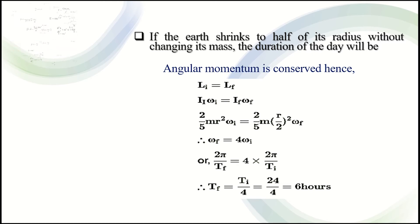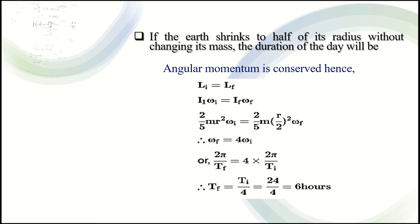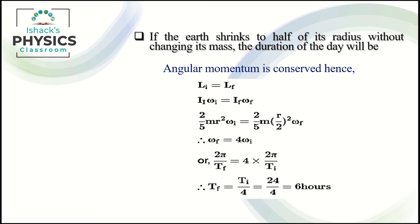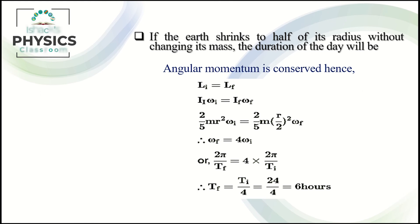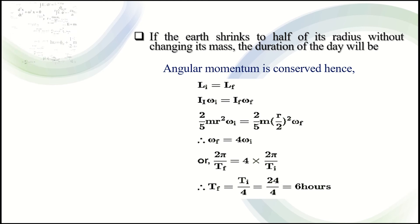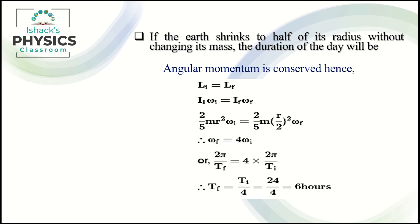In this case we have a solid sphere. The moment of inertia of a solid sphere is (2/5)mR². We substitute: (2/5)mR² times omega_i equals (2/5)m times (R/2)² times omega_F.